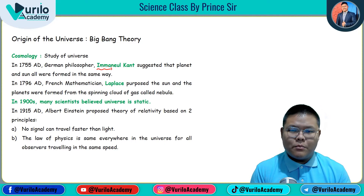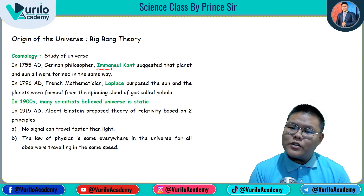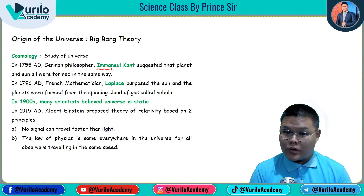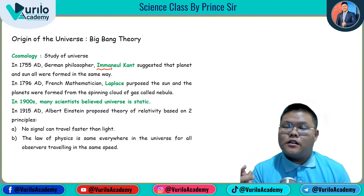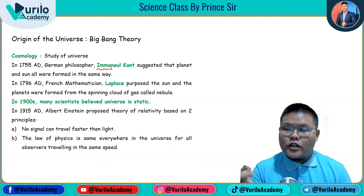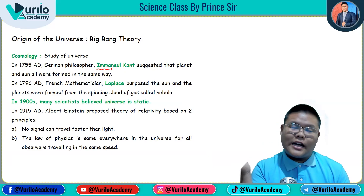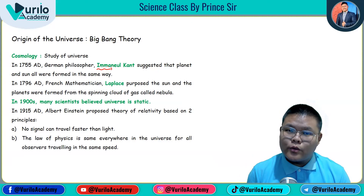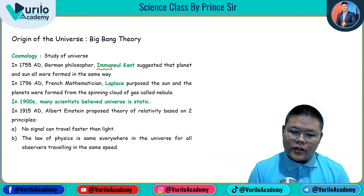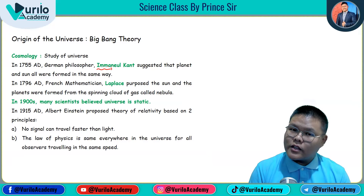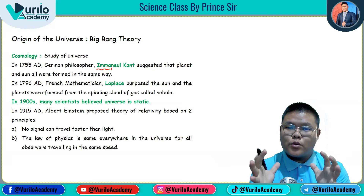Emanuel Kant described this planet and its formation. Then in 1796 AD, French mathematician Laplace proposed his theory, which is important regarding how planets formed. In 1900, many scientists believed the universe was static — stationary, not in motion.